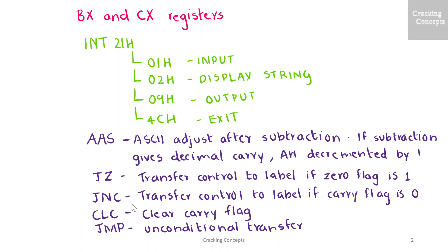Following are the instructions I'll be using in the program. AAS stands for ASCII adjust after subtraction. This is similar to ASCII adjust after addition, except that if subtraction is performed and it results in a carry, then the value of the AH register is decremented by 1.